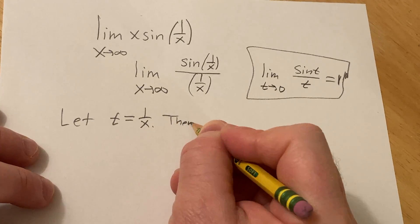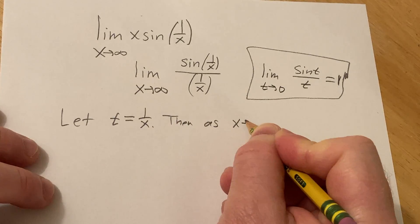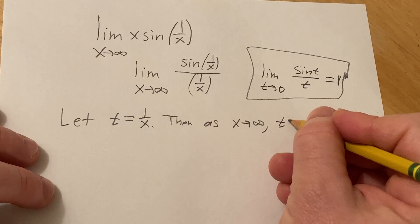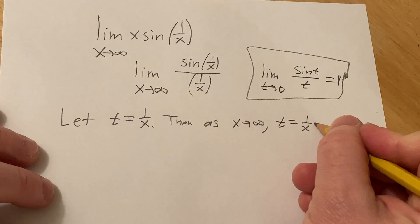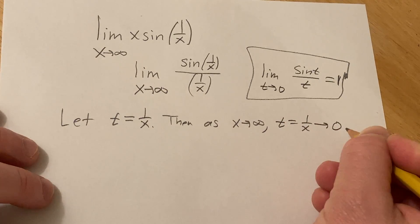Then, as x approaches infinity, we have that t, which is 1 over x, approaches 0.